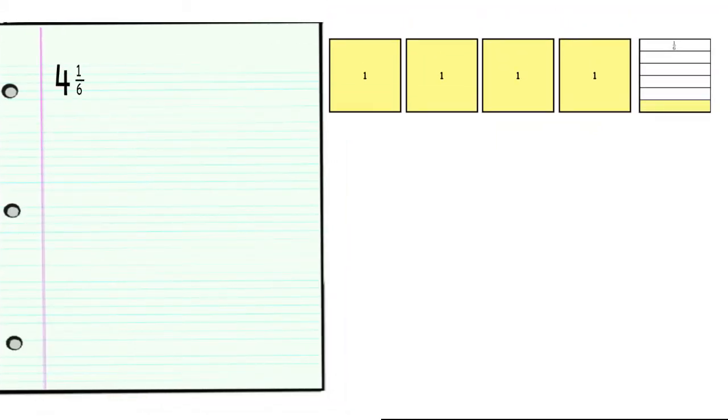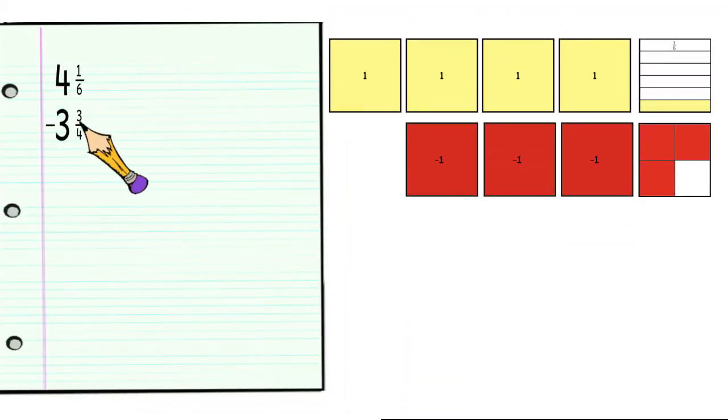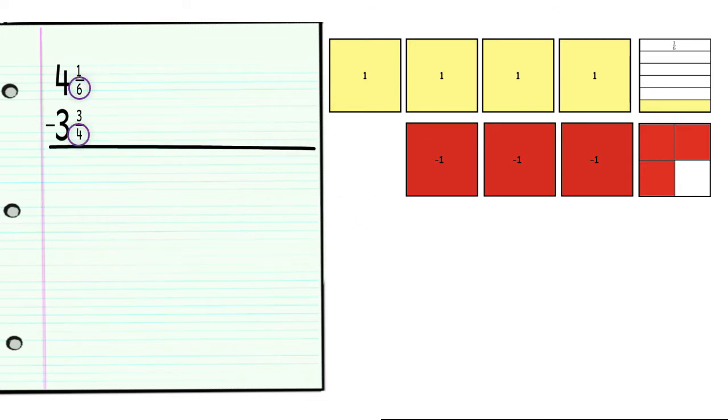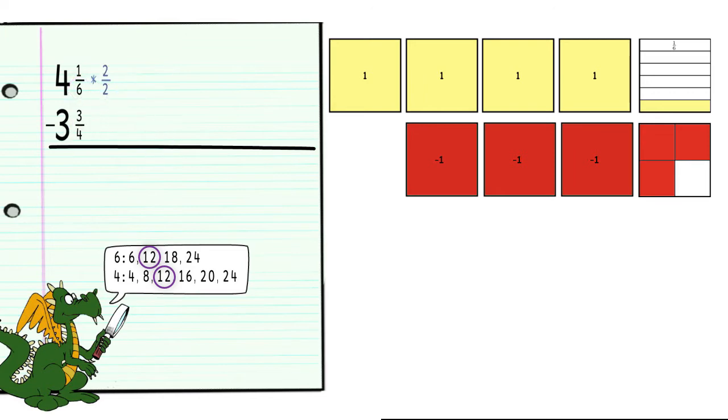Let's look at one last problem. Four and one-sixth minus three and three-fourths. The first thing that we notice is that the fractions do not have a common denominator. Some of my students would tell me that we should use twenty-four as a common denominator, but that's not the least common denominator. We will use the same procedure we did before. We can rewrite the problem as four and two-twelfths minus three and nine-twelfths.